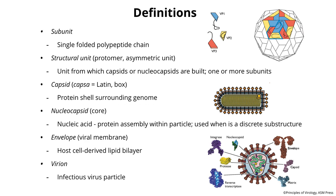Now we have some definitions. A subunit is simply a single polypeptide that makes up a capsid or virus particle. A structural unit — also called a protomer or asymmetric unit — is the unit from which capsids are built. Here, this triangle on the upper right, with one blue, one yellow, and one red subunit (each a polypeptide), is the structural unit. You repeat that over and over to make a capsid, which is the shell surrounding the genome.